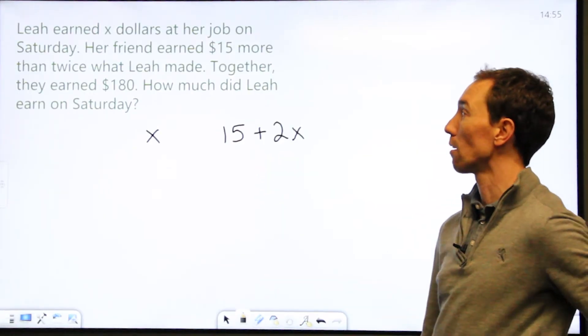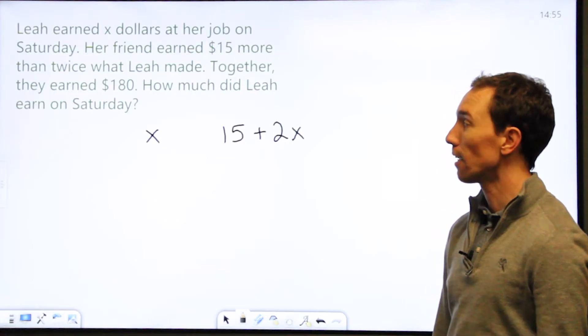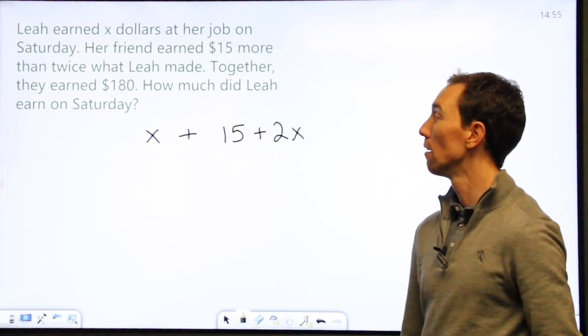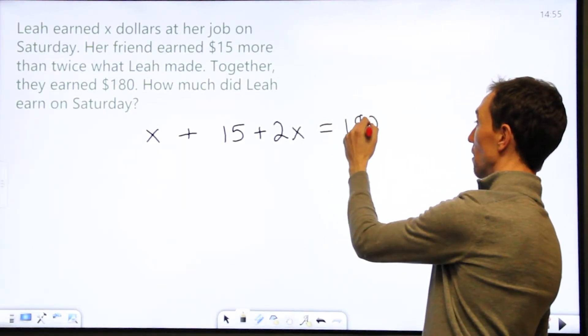And then together they earned $180. So together means I need to add them together, and it all totals up to 180. Okay, so now I have this equation that I could solve.